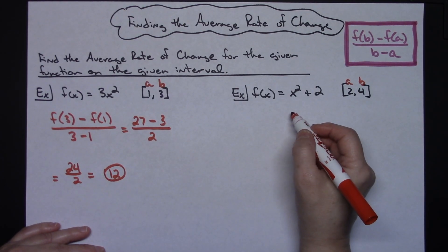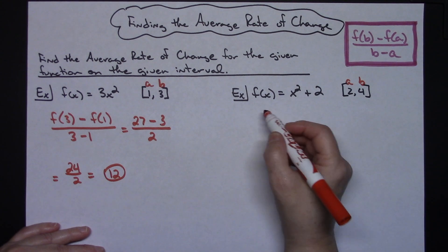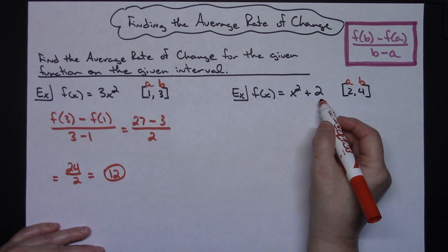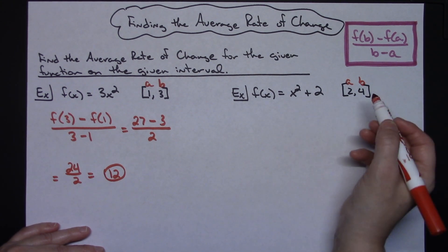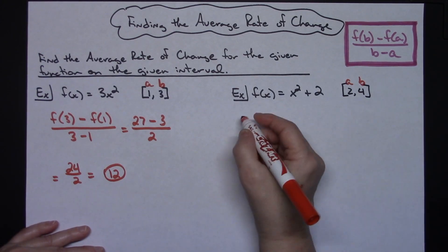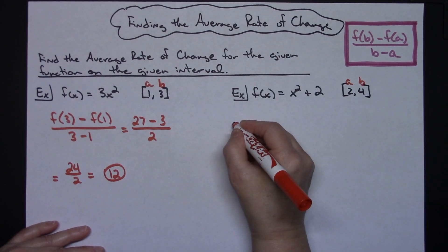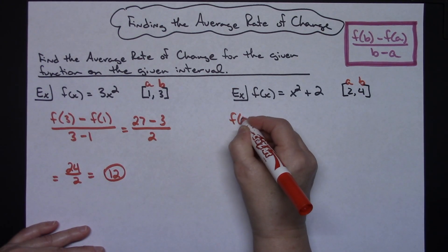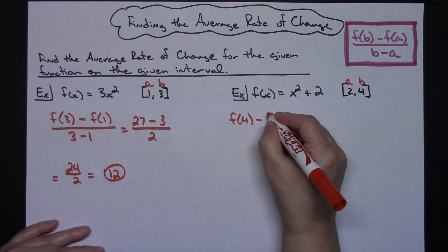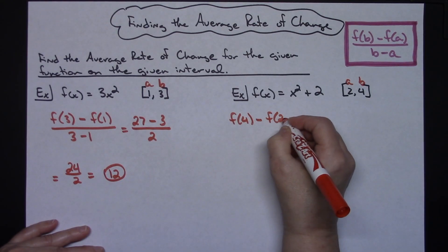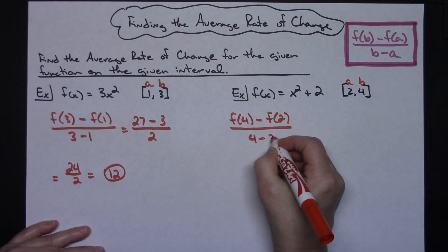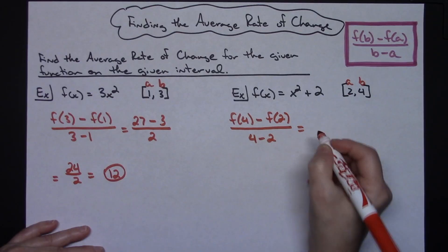Working out the second example: F of X equals X squared plus 2, on the interval from 2 to 4. Plugging B and A into the function, I have F of 4 minus F of 2, all over 4 minus 2.